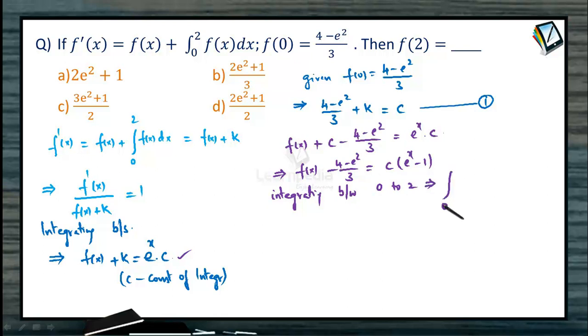We get integral 0 to 2 f of x dx plus minus this constant 4 minus e squared by 3 times integral 0 to 2 1 dx equals c times integral 0 to 2 e to the power x minus 1 dx. But the value of integral between 0 to 2 f of x dx itself is the value of k which we created. So we got another relation involving k.